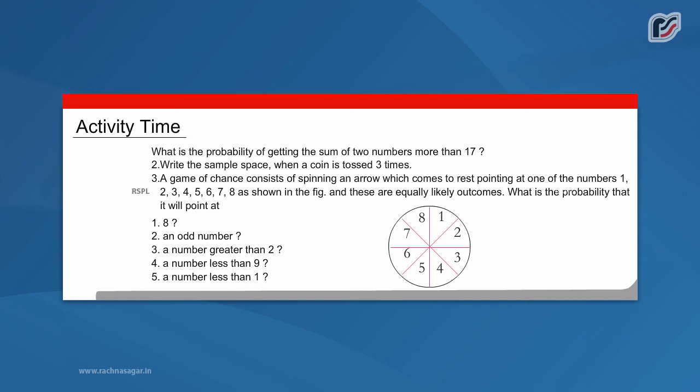A game of chance consists of spinning an arrow which comes to rest pointing at one of the numbers 1, 2, 3, 4, 5, 6, 7, 8 as shown and these are equally likely outcomes. What is the probability that it will point at: